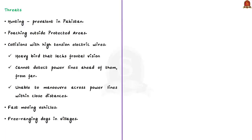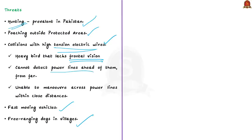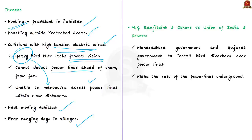Why does this species need ironclad protection? It is threatened by various human activities. The biggest threat is hunting, still prevalent in Pakistan, followed by occasional poaching outside protected areas. Collisions with high-tension electric wires, fast-moving vehicles, and free-ranging dogs in villages are also threats. The Great Indian Bustard lacks frontal vision, so it cannot detect power lines from afar. Being heavy birds, they are unable to maneuver across power lines at close distances and end up colliding. Taking cognizance of this, the Supreme Court asked Maharashtra and Gujarat governments to install bird diverters over power lines and make the rest underground.